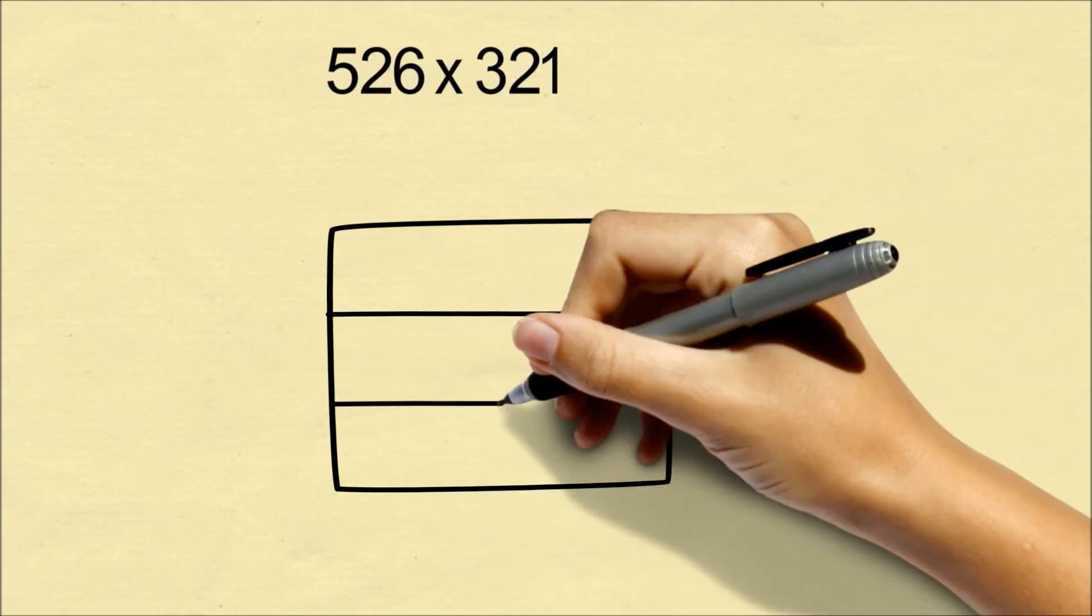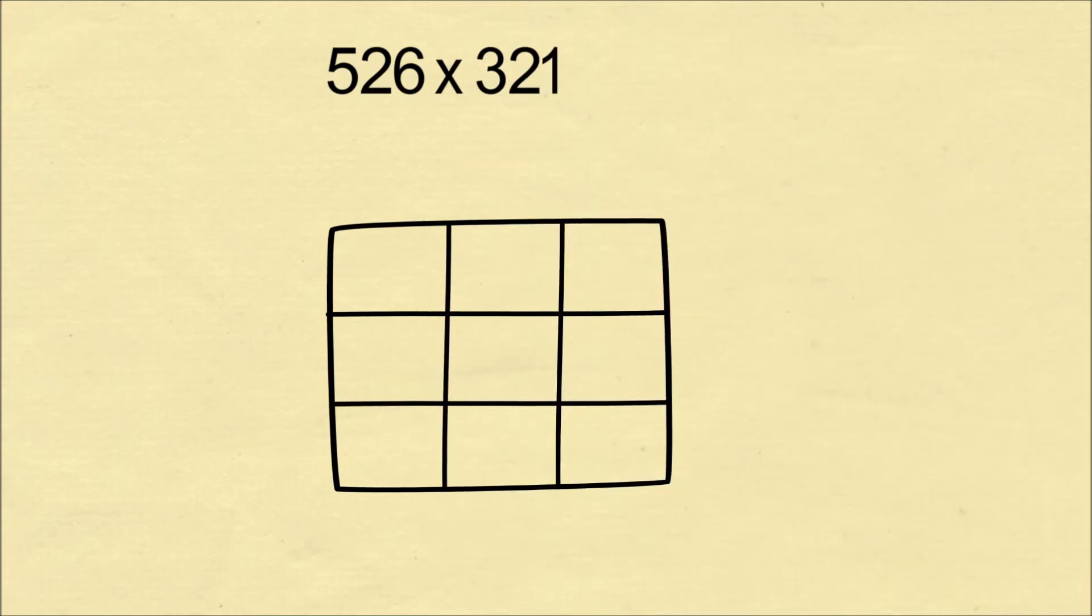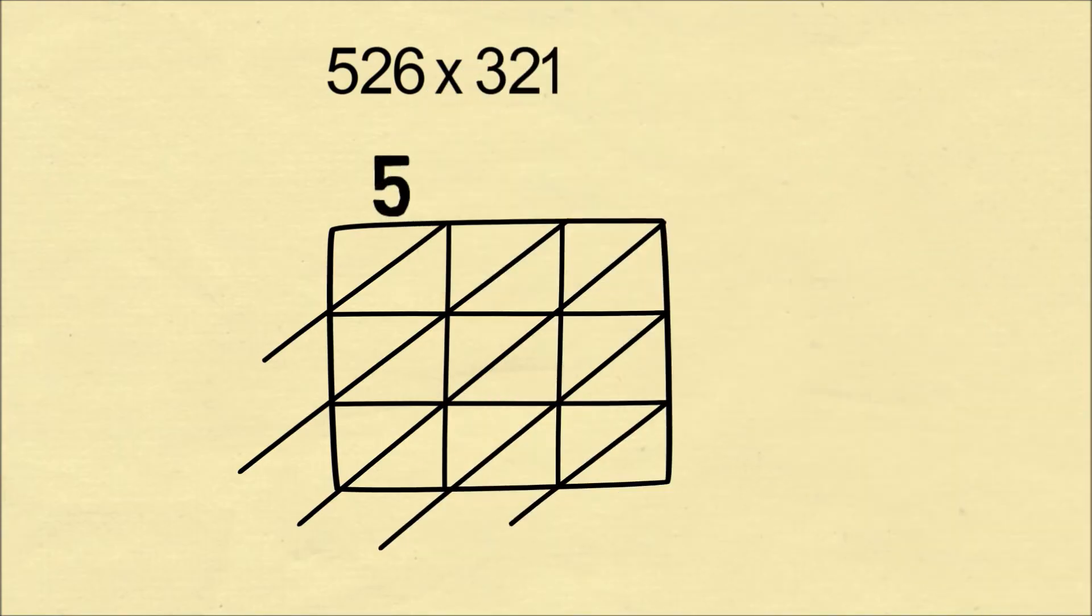Let's do an example of 3-digit numbers. We need to draw out a 3-by-3 table because each of the numbers has 3 digits. We write the number 526 in the row and 321 in the column. Now we multiply each number in each column by the number of that particular row.